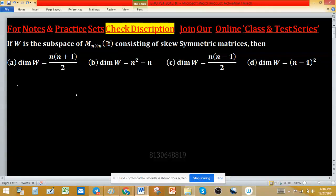If W is the subspace of M_n×n(ℝ) consisting of skew symmetric matrices, where entries of matrices come from the set of real numbers, then we have to find dimension of W.